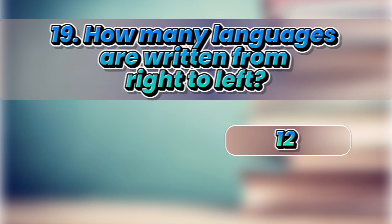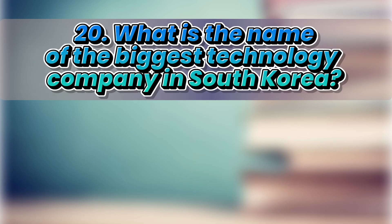How many languages are written from right to left? 8, 10, 12, 15. It's 12.